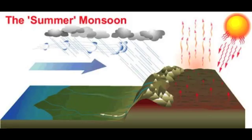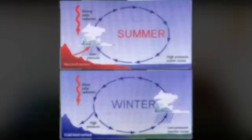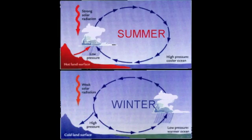However, the air cools when it rises and while it is still over the land. This decreases the air's ability to hold water, causing precipitation over the land.